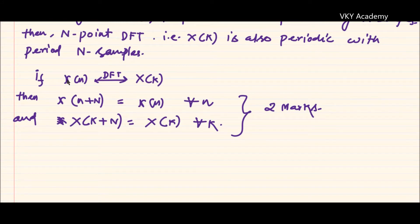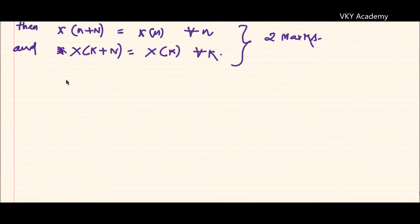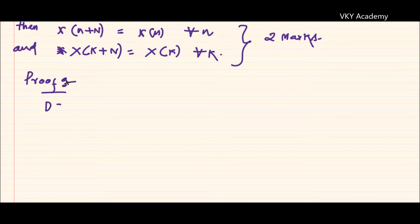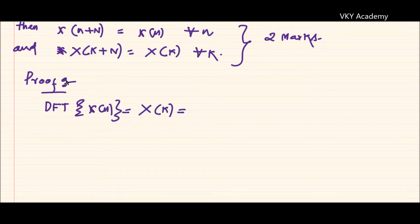Now let us prove this particular property. As we discussed in the previous class, for any proof the first statement should always be the formula. So I can write: DFT of x(n) is equal to capital X(K), which is summation from n equals 0 to capital N minus 1.